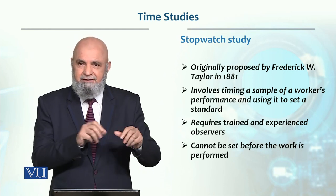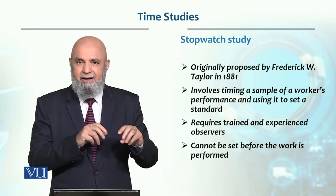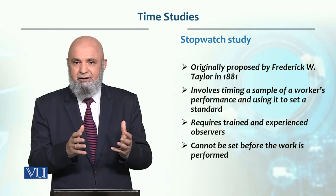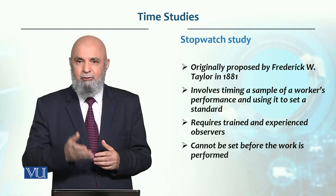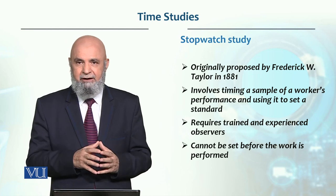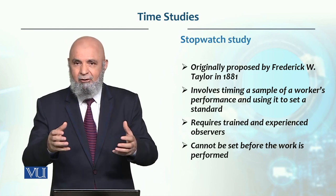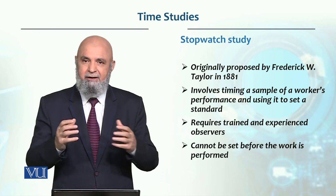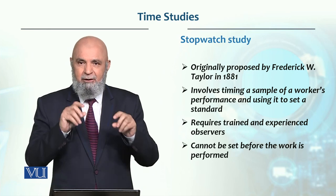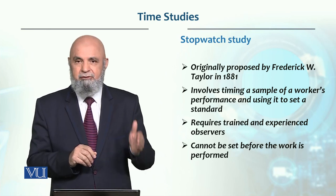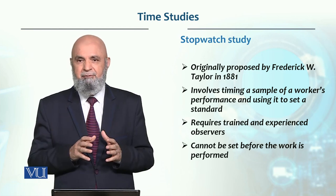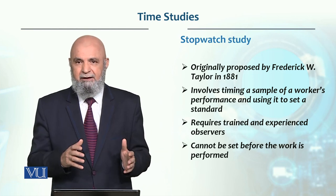اگلا work element یہ ہے کہ tire کے nuts lose کرنے ہیں۔ پانچوں nuts lose کر کے jack لگا کر car کو raise کرنا ایک اور element ہے۔ پھر nuts اتارنا، پرانا tire remove کر کے نیا tire لگانا ایک اور work element ہے۔ پھر nuts tight کرنا، jack کو lower کرنا، اور سارا سامان واپس trunk میں رکھنا - یہ آخری elements ہیں۔